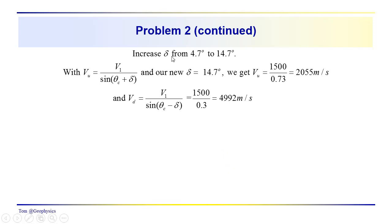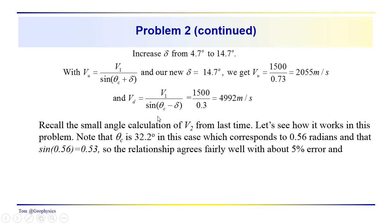The second part of the problem was to increase the dip by 10 degrees, from 4.7 to 14.7 degrees. We're to determine what the apparent velocities VU and VD will be. Using our new dip, we get the up dip velocity of 2055 meters per second and the down dip velocity of 4992 meters per second. Double check my math, see if I made a mistake. This is the procedure you would go through.